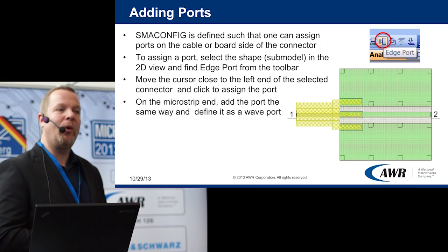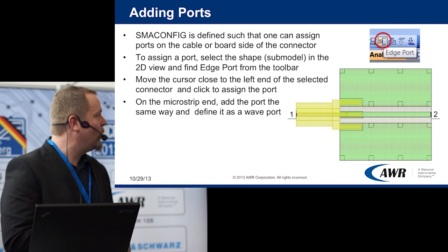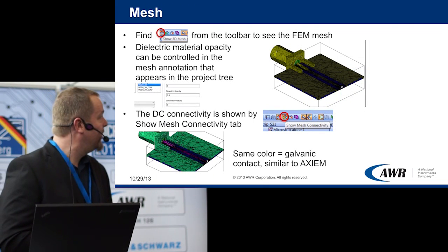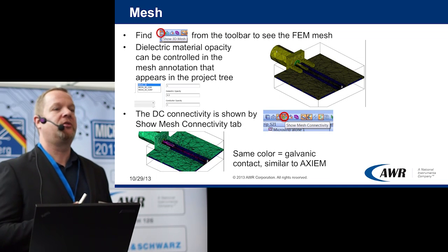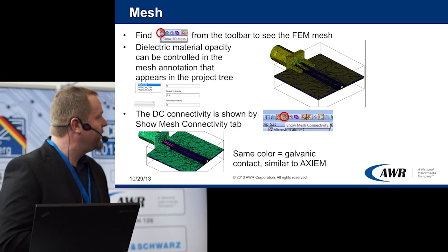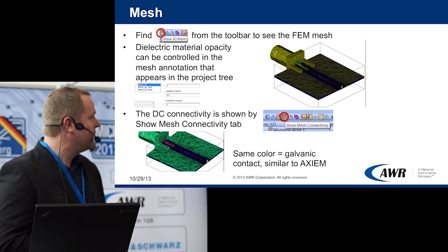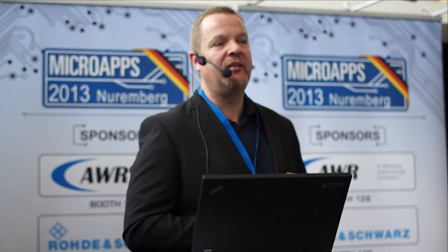In this configuration, we have one port on the coax end — a coax port — and a wave port on the strip end. If we look at the mesh, we can recognize what is typical for FEM: the dielectrics are also meshed. We can set the opacity of the dielectrics — by default it's zero, but if we want to see more clearly where the board boundaries are, we can set it in the annotation in the project tree. There is also a new DC connectivity feature from the toolbar, which shows which metals have a DC connection, serving as a sanity check for the design.